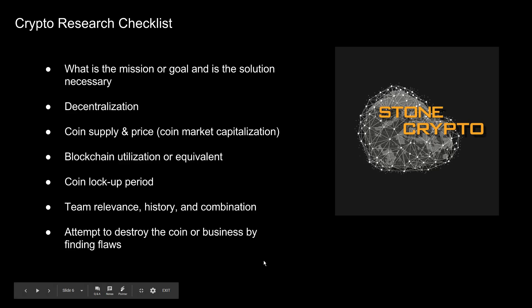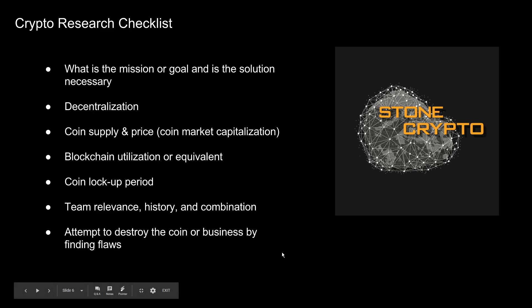My crypto research checklist — I ideally like to have all of this checked off before investing in any crypto, and if something is not checked off, that's a red flag. I start with: what is the mission and goal of this particular cryptocurrency, and is the solution necessary? For example, are they decentralizing a certain industry that currently has a large monopoly in the traditional world? Spaces like pharmaceuticals or online retail are dominated by a handful of players — decentralizing those markets would be something worth looking into.